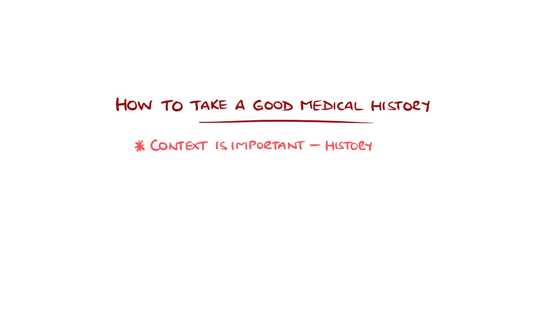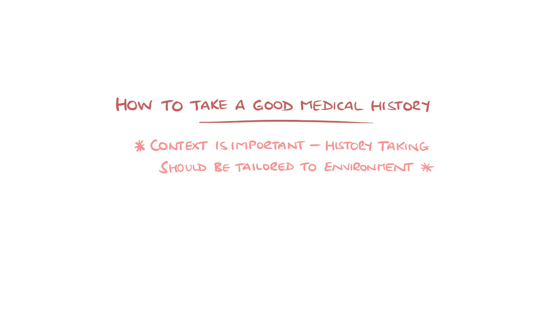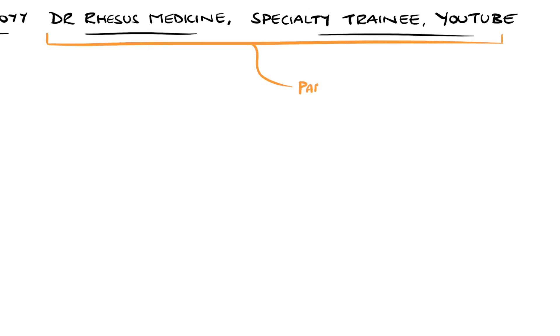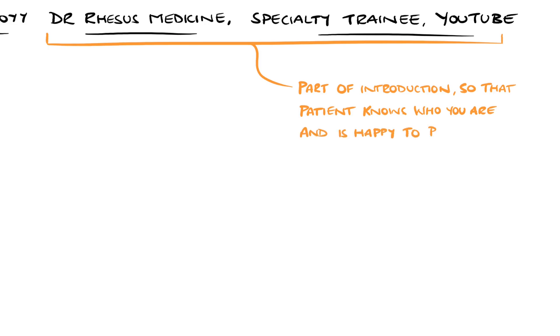History taking is a crucial skill in medicine. The context is important, so the approach may need to be adjusted to meet the scenario or work environment. Before beginning, we need to confirm the patient details, and on our entry we need to include the date and time of the encounter, our name, designation, and the service we represent — the last three being communicated to the patient as well, so that they know who you are and that they are happy to proceed.